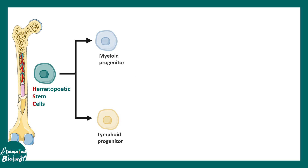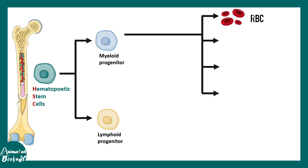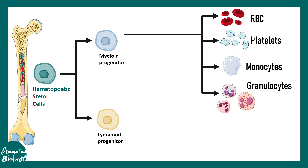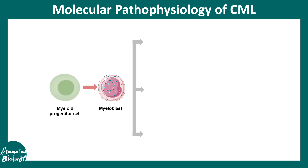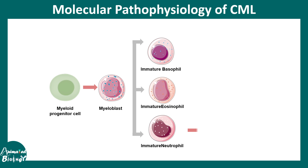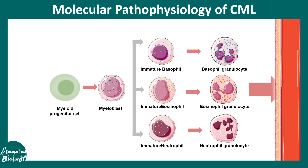Overall, there are myeloid and lymphoid progenitors, which are sub-derivatives of hematopoietic stem cells. The myeloid progenitor gives rise to RBCs, platelets, monocytes, granulocytes, etc., while the lymphoid progenitor gives rise to T and B cells. The myeloid progenitor gives rise to white blood cells in a sequential manner, leading to formation of myeloblasts, then immature basophils, neutrophils, and eosinophils, which eventually mature and get released into the blood.